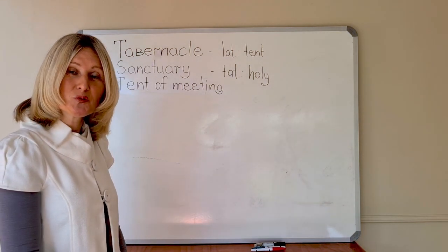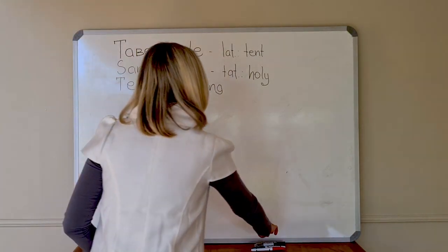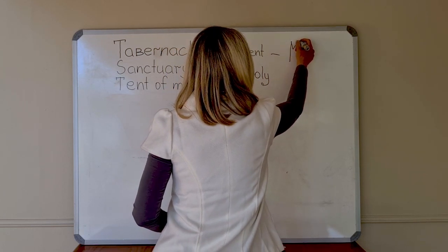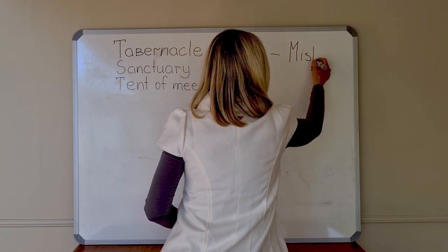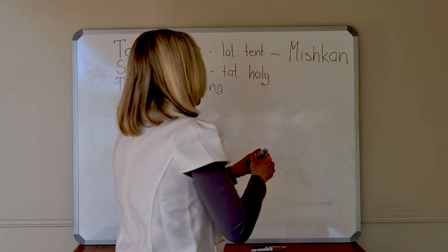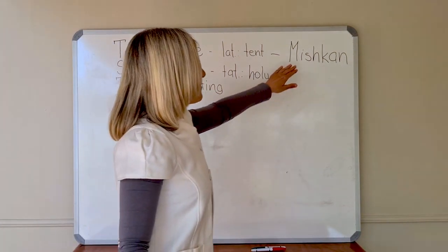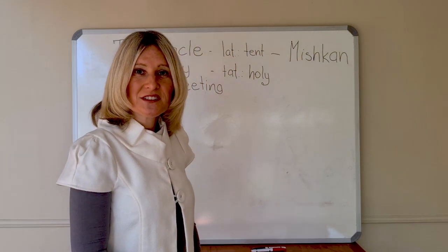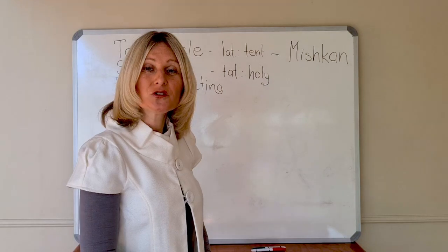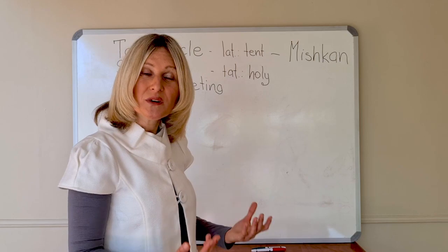In Hebrew, we also have three words that signify a sanctuary. The first one is Mishkan. Mishkan consists of two words: 'me,' which means 'in,' and 'Shekan,' which means to dwell or to love — to love in some way or with someone.